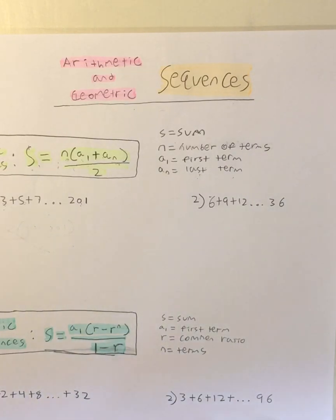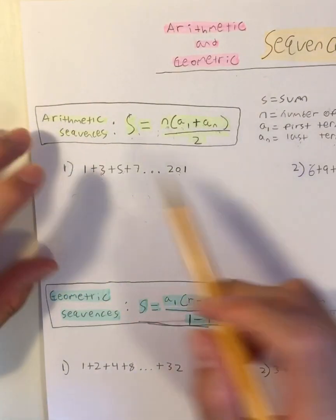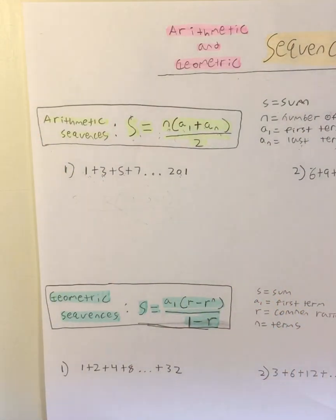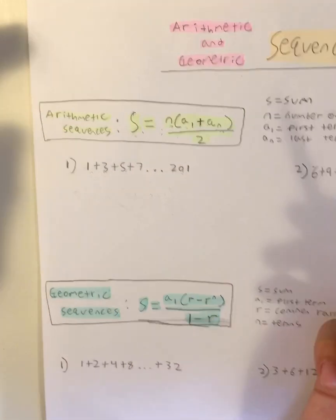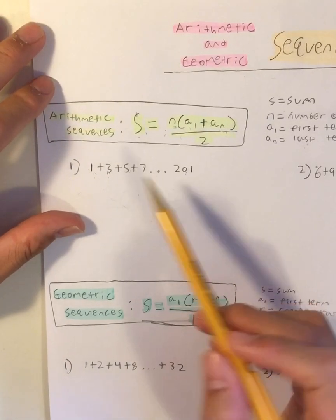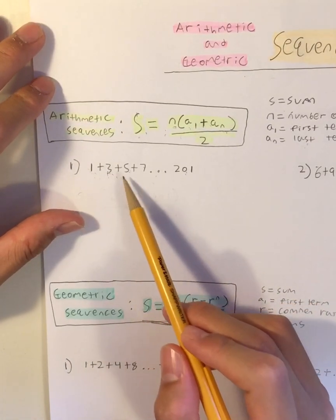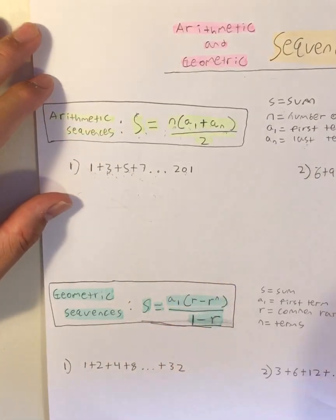So basically an arithmetic sequence is when there is a sequence with a common difference. For example, what is the common difference here? It's going to be 2, because 1 plus 2 is 3, 3 plus 2 is 5, 5 plus 2 is 7, and so on.